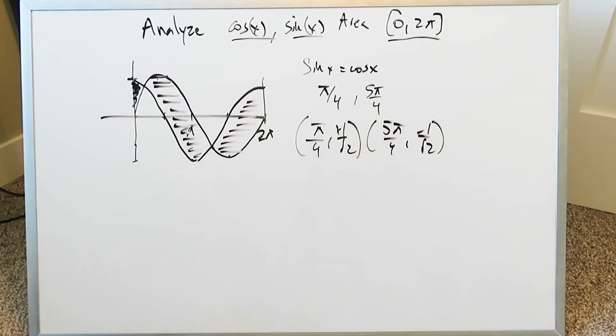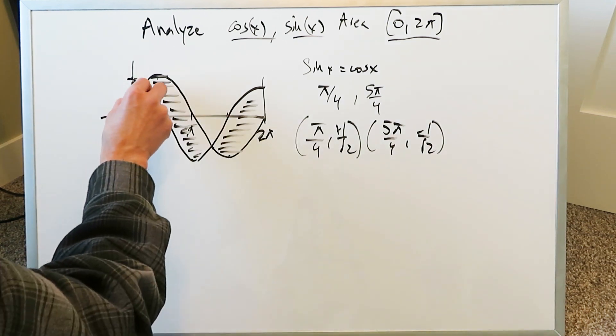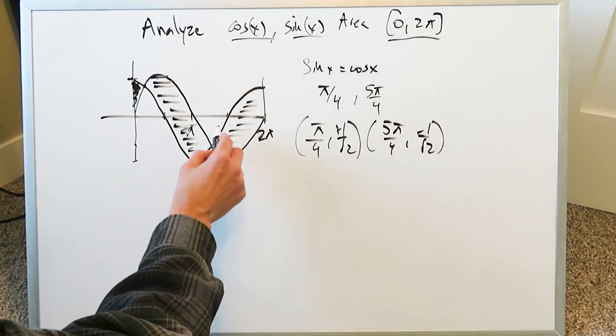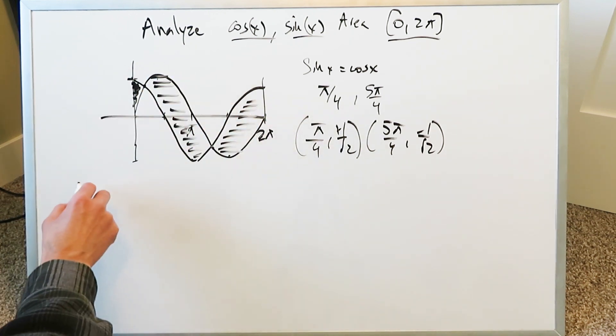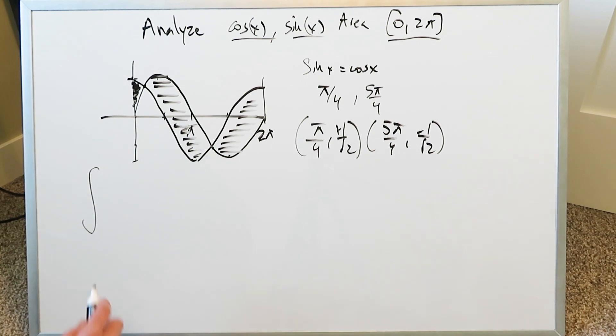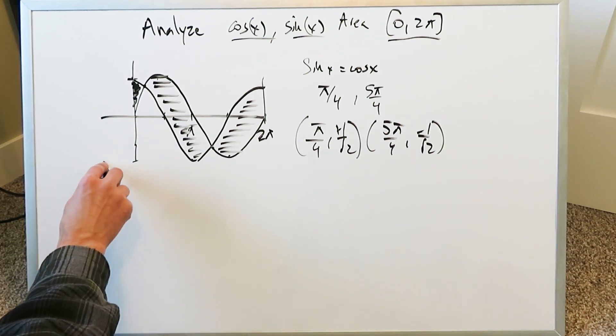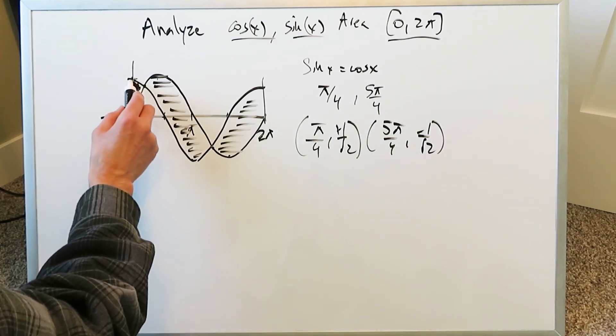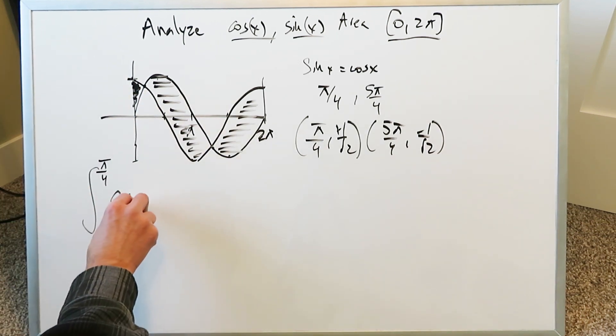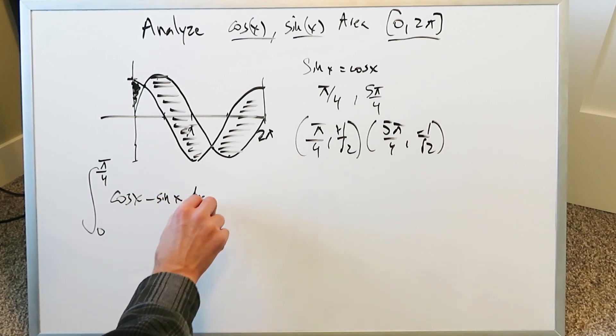You can develop your integral from this. Your intersection points are at 45° and 225° along the x-axis. From 0 to π/4, the superior curve is cos(x) and the inferior curve is sin(x).